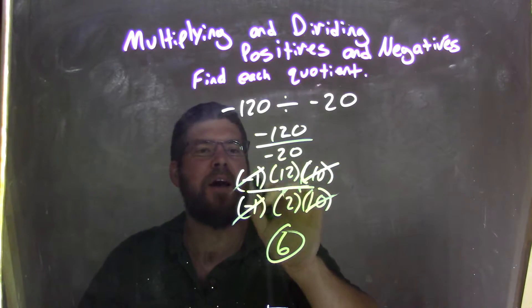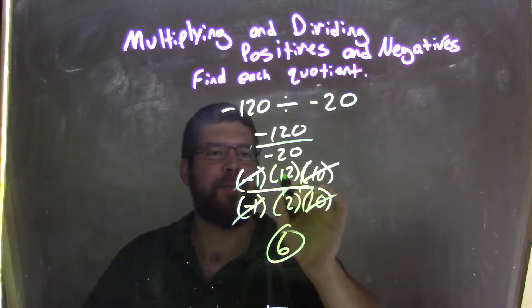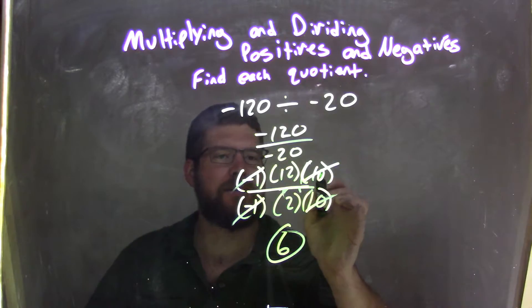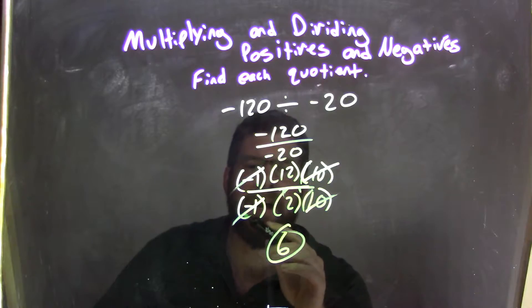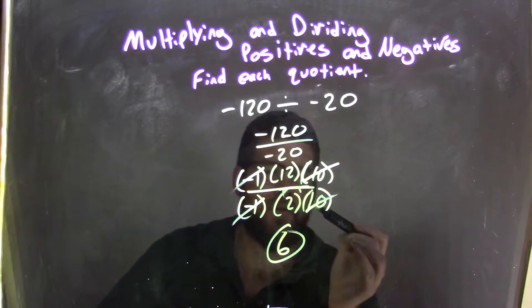My next step, I broke it down to be, on the numerator, negative 1 times 12 times 10. You can see how 10 times 12 is 120, and the negative 1's up there. The denominator could be negative 1 times 2 times 10. 2 times 10 being 20.